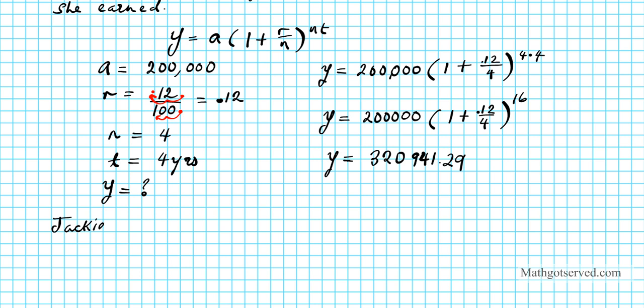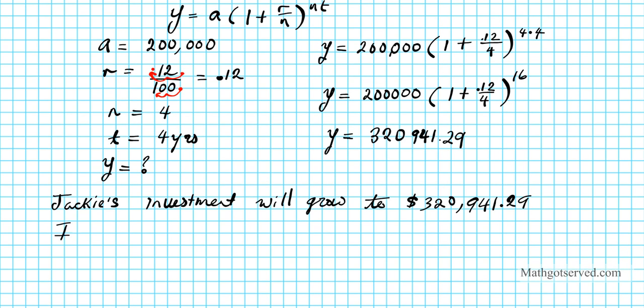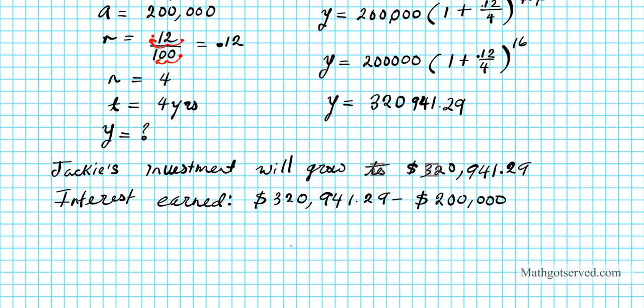Jackie's investment will grow to $320,941.29. How much interest did she earn? Well, for interest earned, we just ask ourselves, by how much did the account grow? We subtract the original amount, $200,000, from the final figure, $320,941.29. This is simply $120,941.29. So this is the amount of interest that she earned over the four-year period.